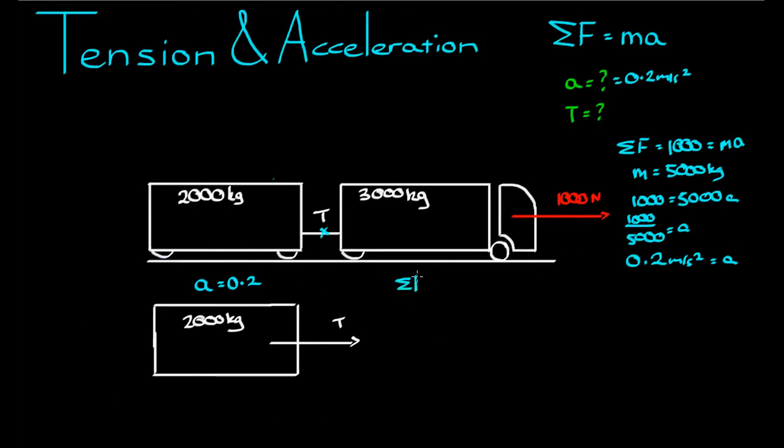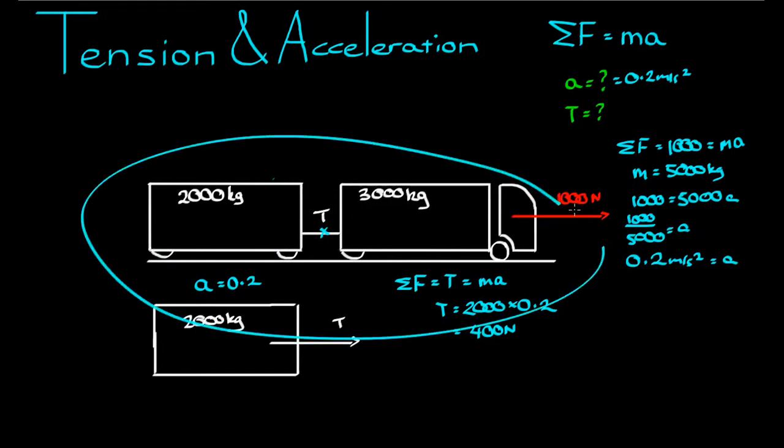We have the sum of the forces. Well, there's only one force. That's equal to tension. And that's equal to the mass times the acceleration. T is equal to 2000 times 0.2, which is equal to 400 newtons. So the tension in this cable here is 400 newtons. And that keeps the rear load accelerating at the same rate as the entire system is accelerating.